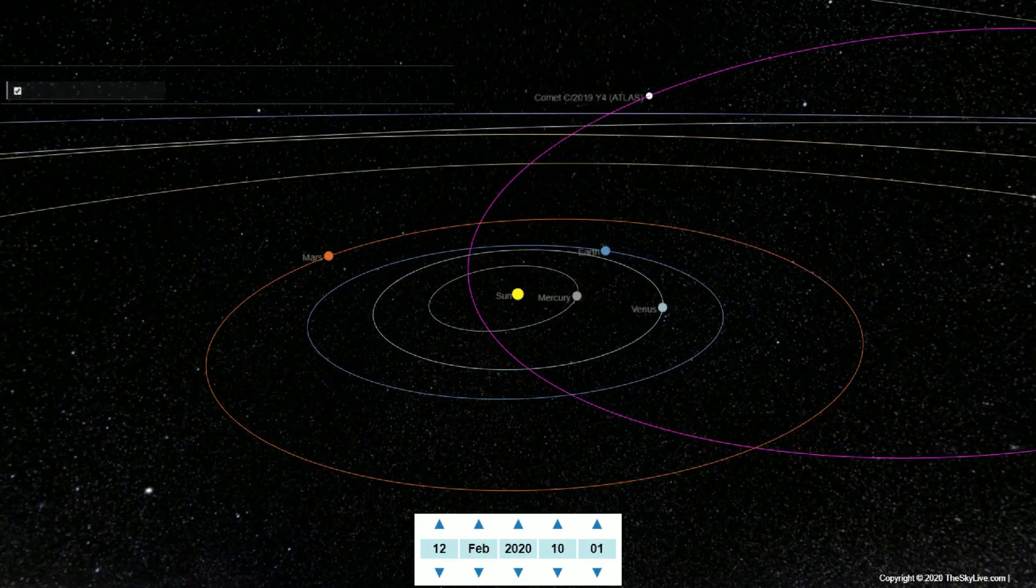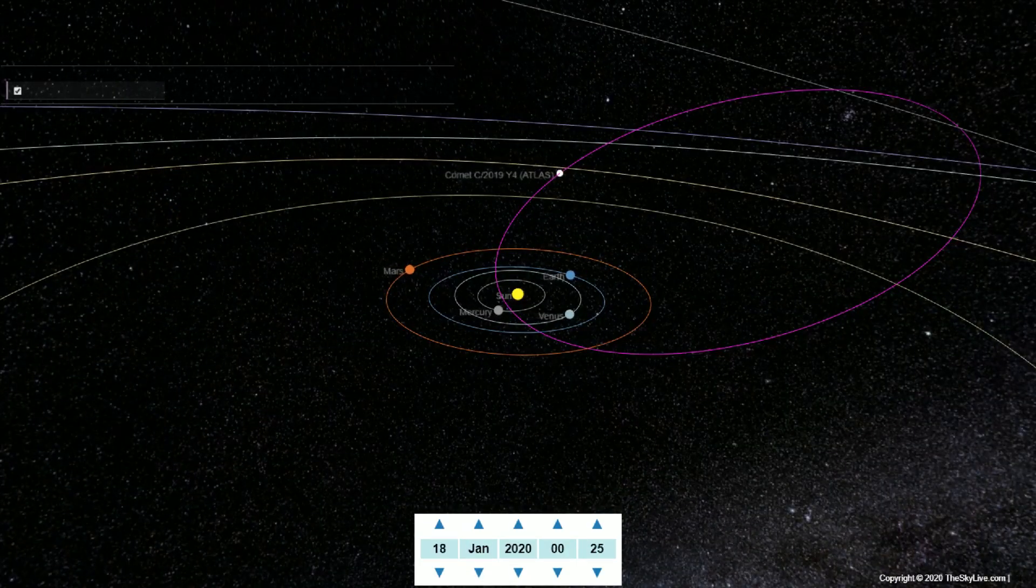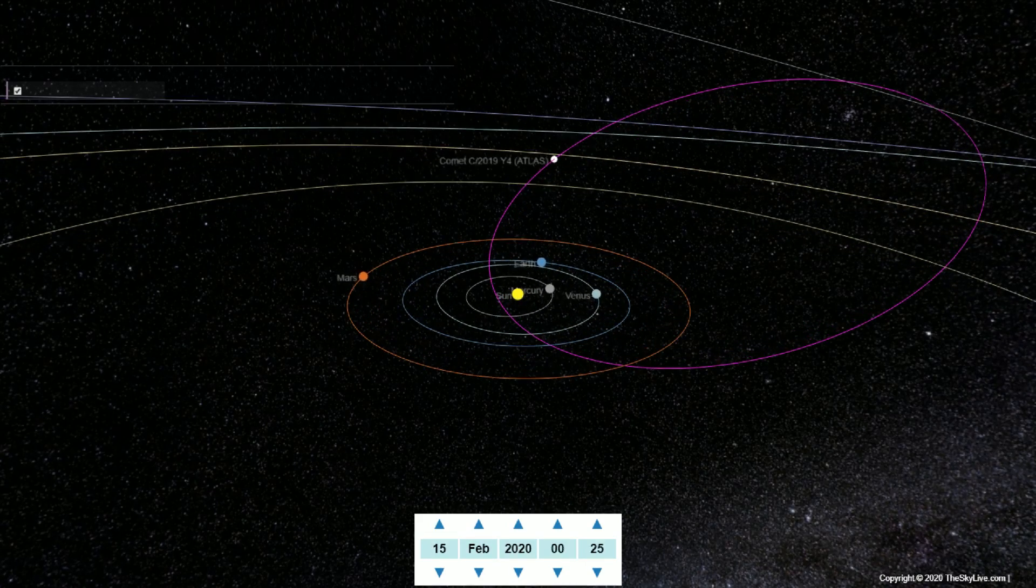Throughout the month of April, the comet will be visible in the constellations of Perseus and Camelopardalis. On May 31 at its perihelion, it will be in the Taurus constellation.